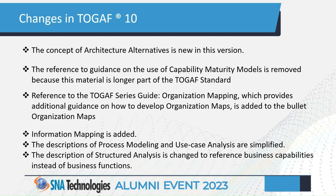A new concept has been introduced: alternatives for the architecture. In reality, we may not have just one target architecture — we may need to come up with multiple alternatives for the target architecture. Those alternatives need to be analyzed to find either a combination of alternatives or the one alternative that is best suited for the organization.